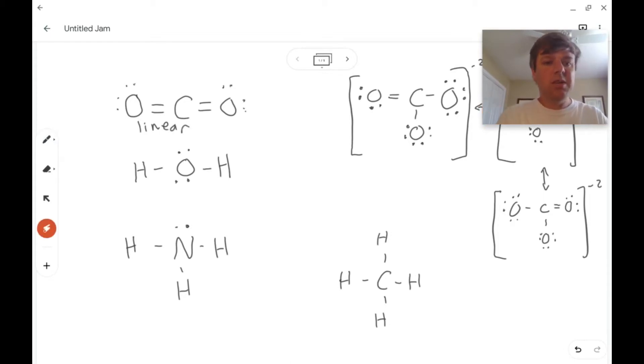With H2O, we have two things attached to the oxygen in the middle, but we also have two unbonded pairs of electrons, and so this shape is bent.